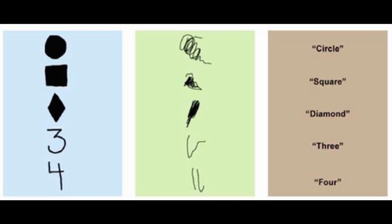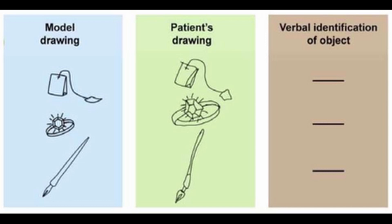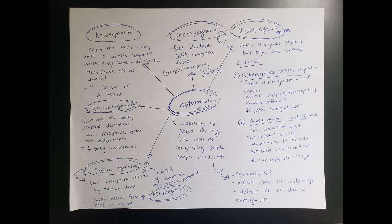The next kind is associative visual agnosia. This means the person can describe or associate visual descriptions to objects but can't recognize them. For example, they might know that a star has five corners, but if you gave them that shape, they wouldn't be able to label it as a star. The key difference from perceptive is that with associative visual agnosia, the person can copy the image — they just can't label or recognize it.